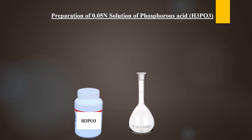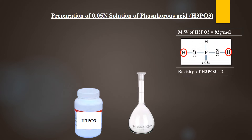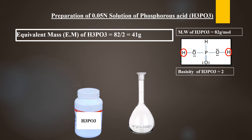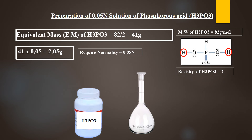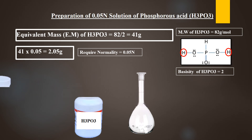To prepare 0.05 normal solution of phosphorous acid, find out its molecular weight, which is 82 grams per mole. Draw its structure and find out the replaceable hydrogen ions — there are 2 replaceable hydrogen ions, so the basicity of phosphorous acid is 2. Divide 82 by 2 to get an equivalent mass of 41 grams. Multiply 41 by 0.05 since we want to prepare 0.05 normal solution — the answer is 2.05 grams. Take 2.05 grams of phosphorous acid, dissolve it in water, and dilute the solution up to 1000 milliliters. This will be 0.05 normal solution of phosphorous acid.